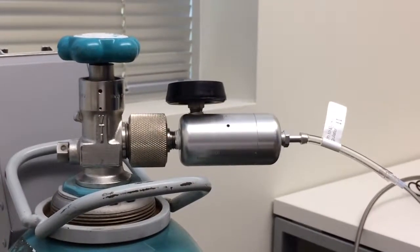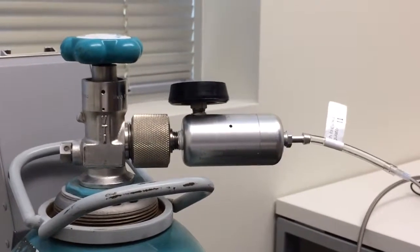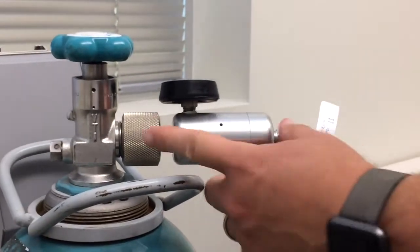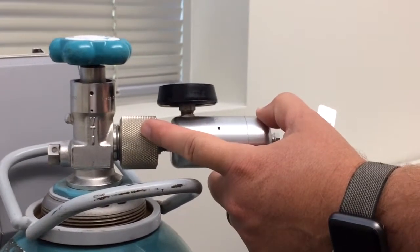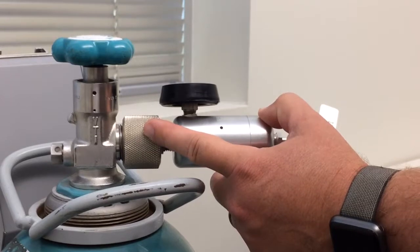So this is the backup system for the Aranox, a really simple system. We've got a preset regulator that hooks directly to the tank. It's set at 0.25 liters per minute.